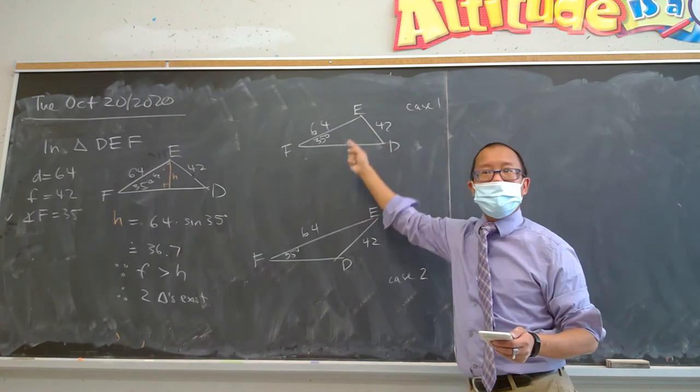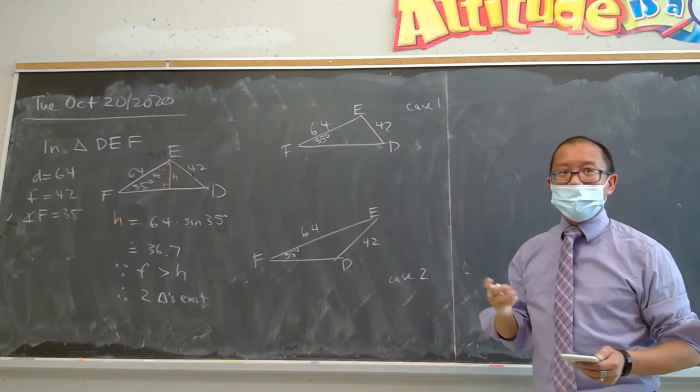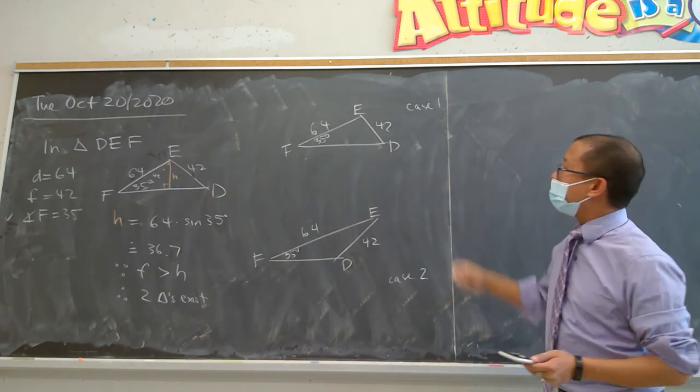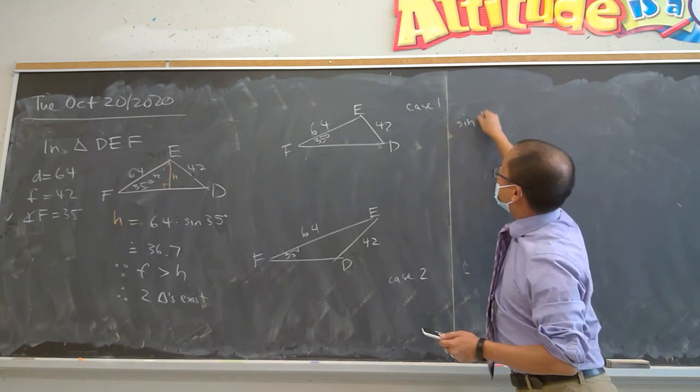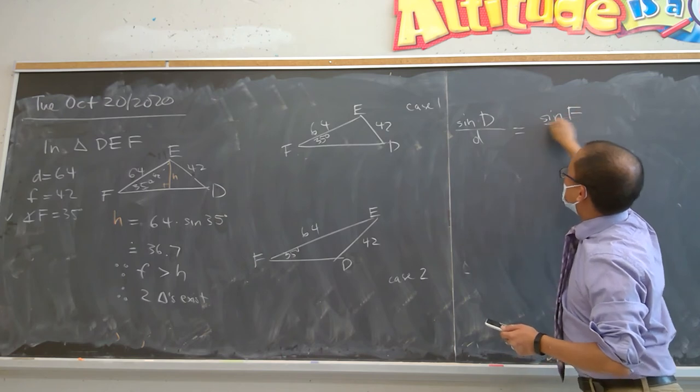I think everyone understands to solve this, I can't get angle E or side E. You want to agree? I can't get that right away. Right? So everyone, I think, realizes we're going to probably solve for angle D first. How to do that? Really easy.